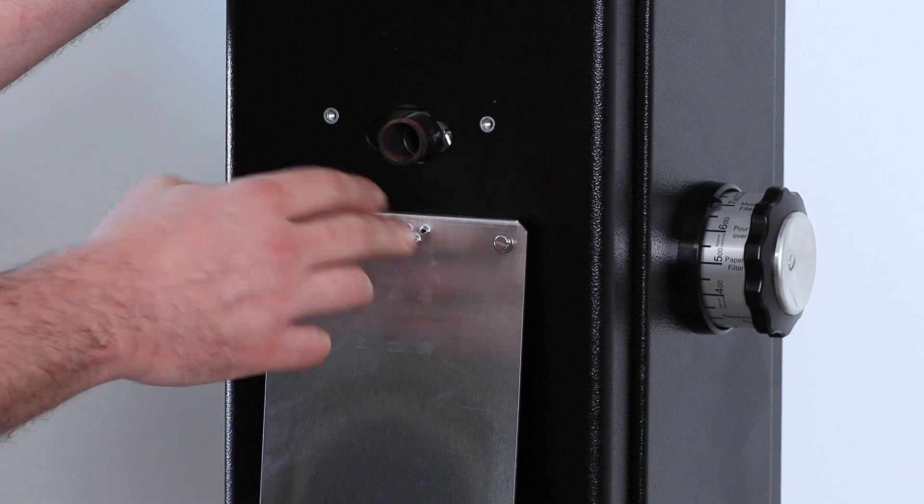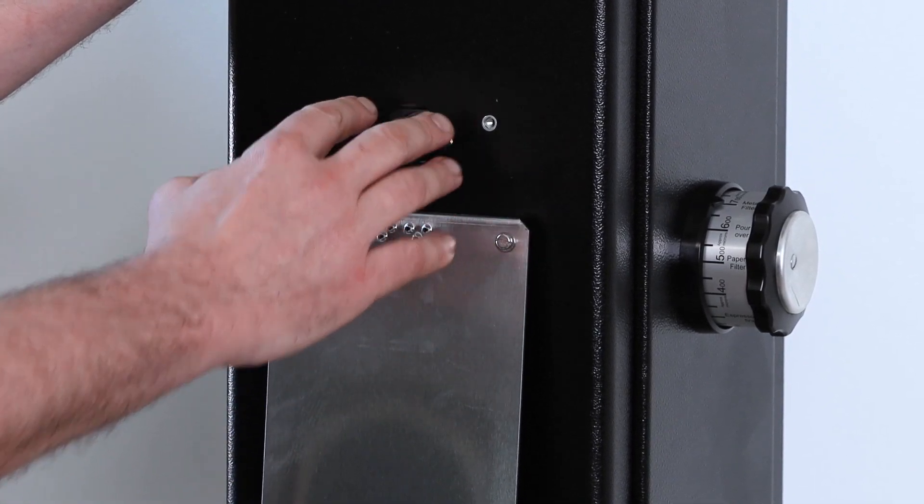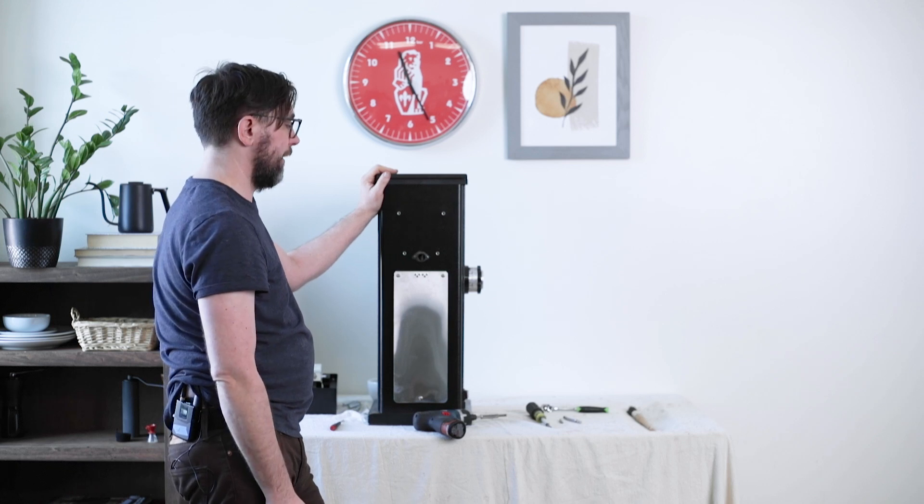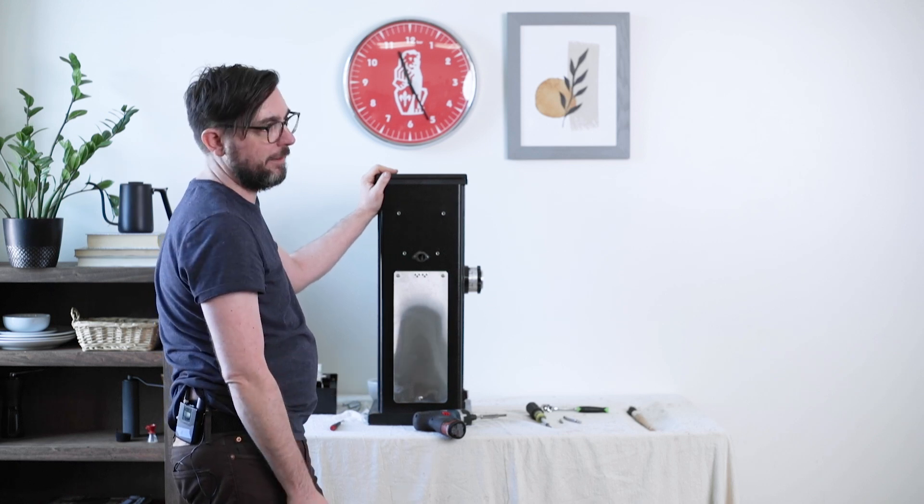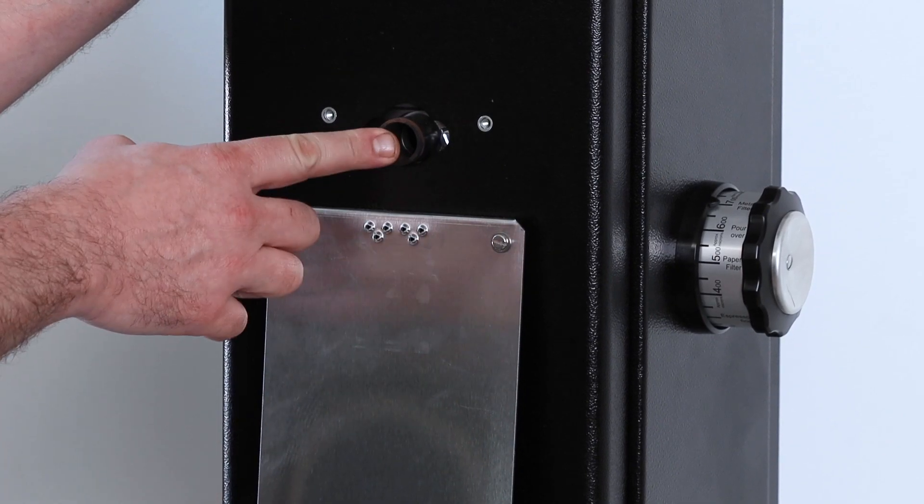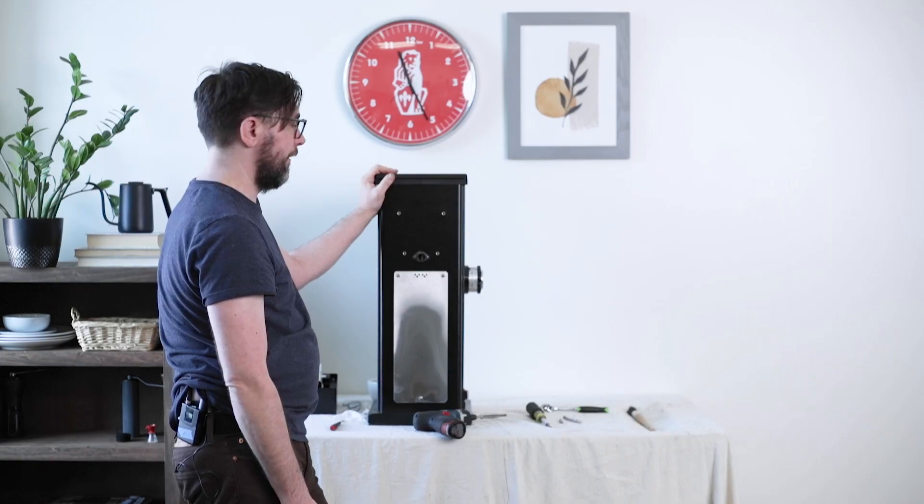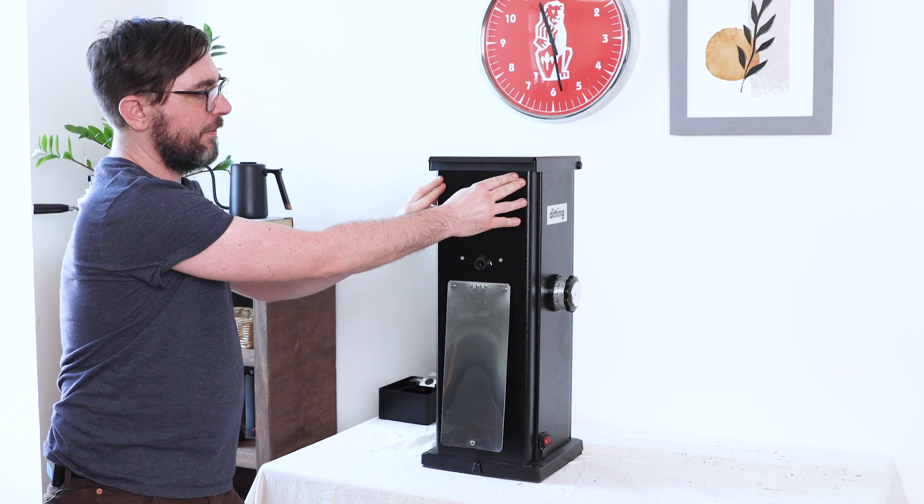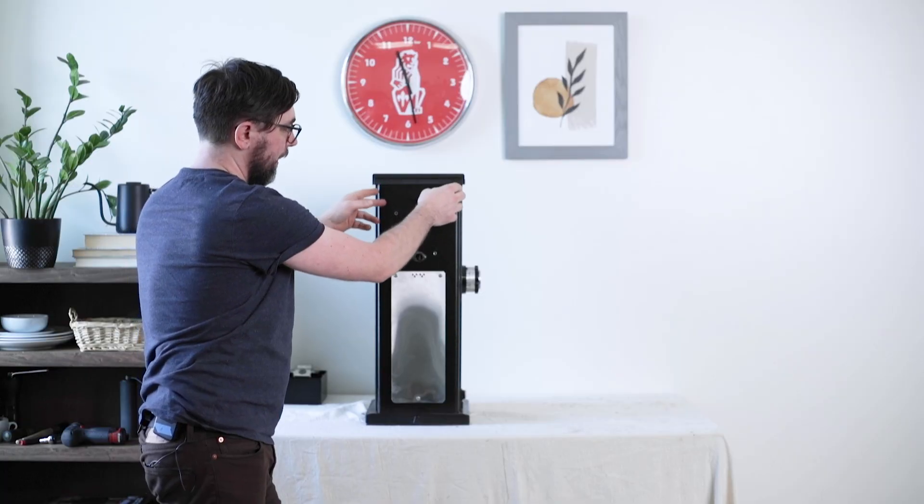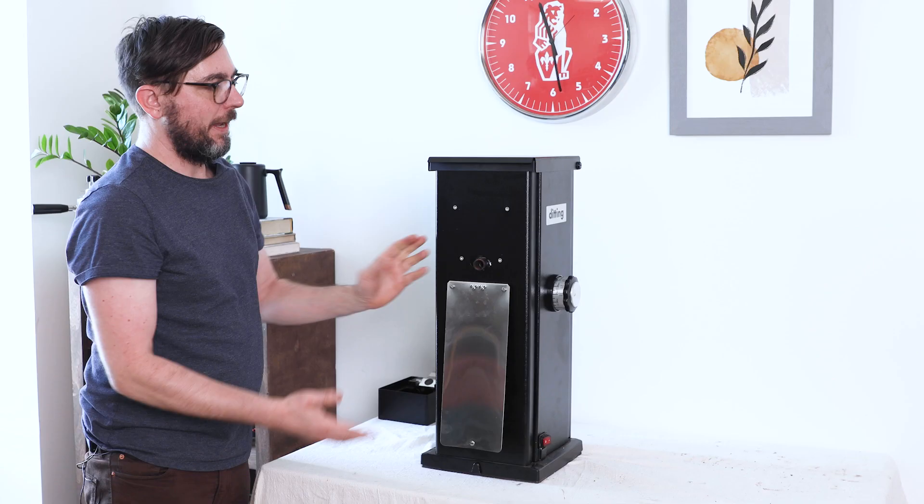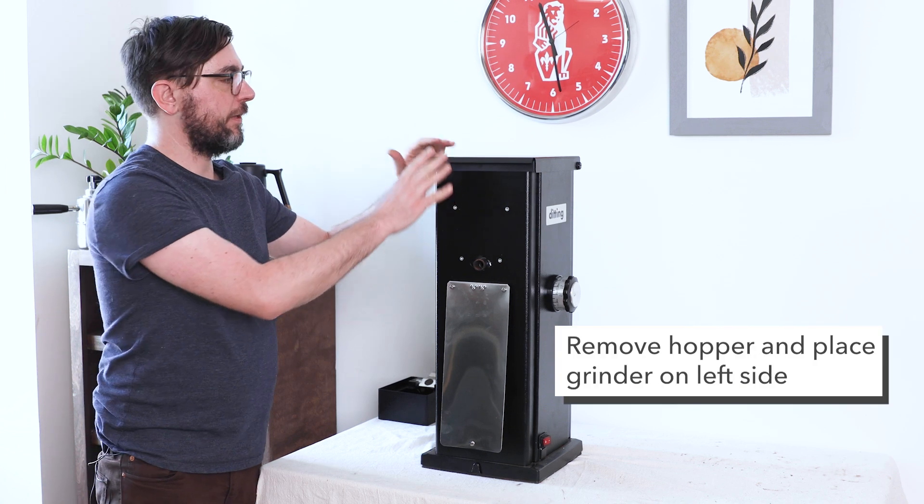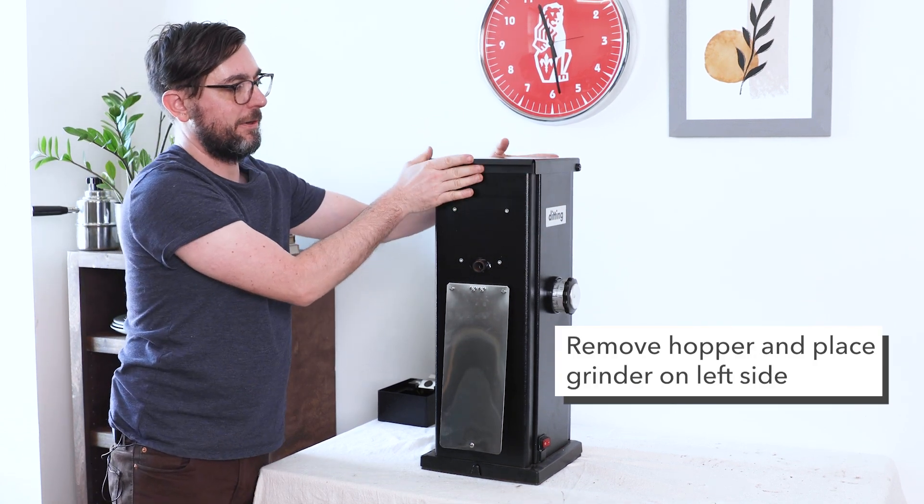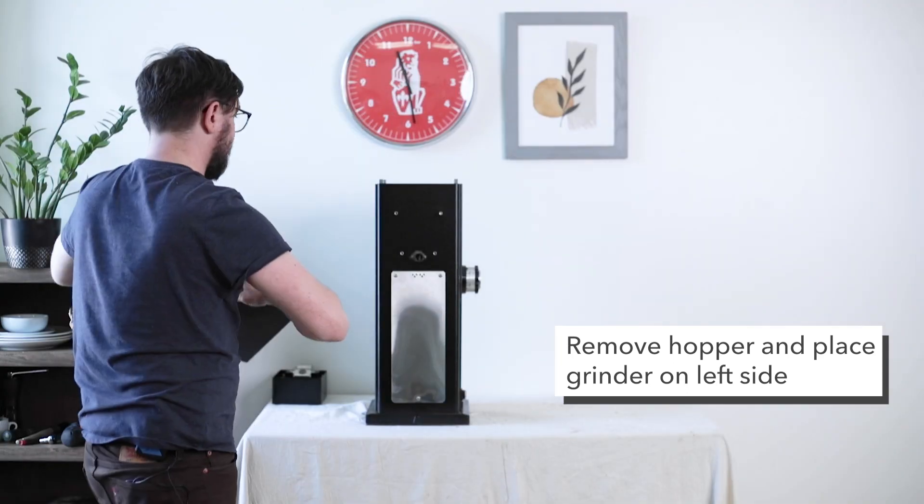However, it's pretty difficult to get those screws in and out without dropping them into the body unless we remove the front panel. So we're going to remove the front panel so you can see how this assembly comes out and goes back in on the outside of the grind chamber. To remove the plate, we need to remove eight bolts. There's four at the top, four at the bottom. I need to put the grinder on its side, so I'm going to remove the hopper. I've already removed the four screws that hold the hopper onto the grinder.